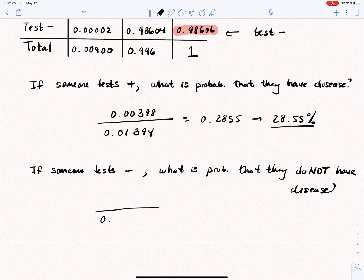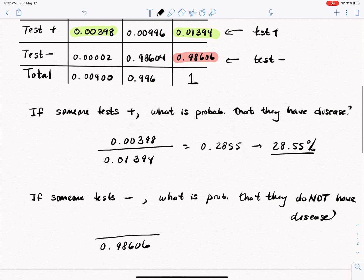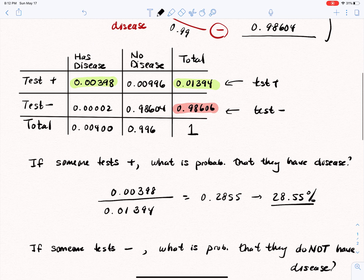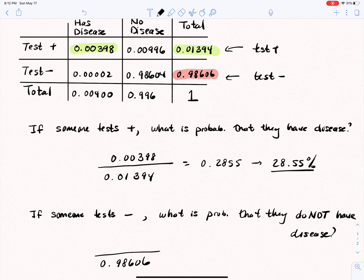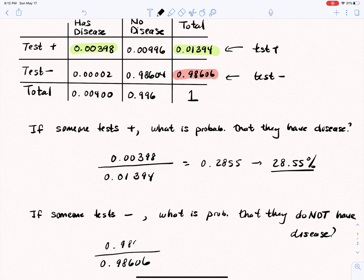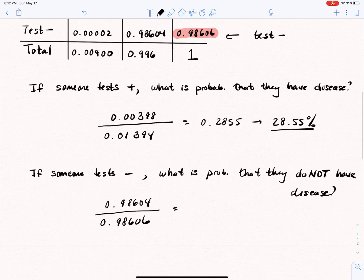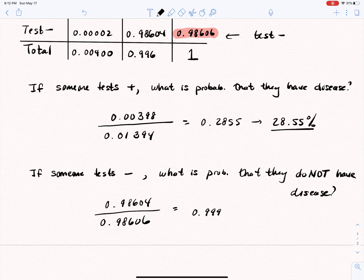And what portion of that actually do not have the disease? Well, that is the 0.98604. Notice those numbers are very close to each other, which means this probability is very close to 1. In fact, if we compute that out, we get 0.99997972. And I'm sure that keeps going. So what we're talking about is 99.997972 and more percent.